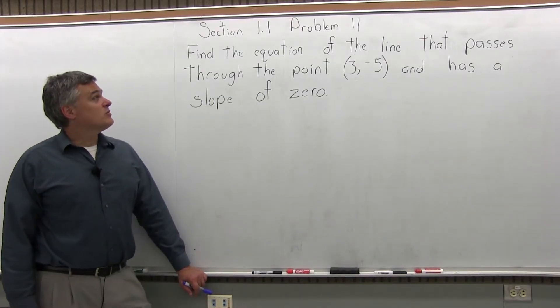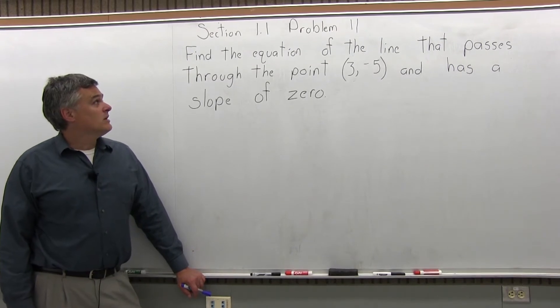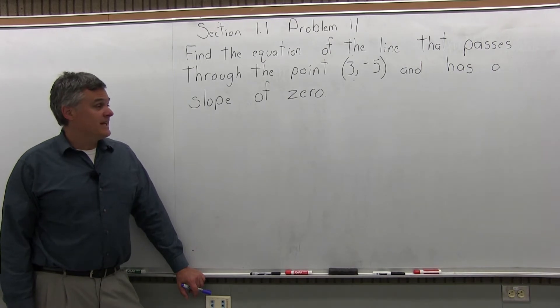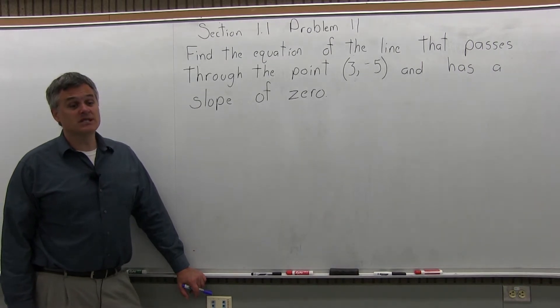This is question number 11 from section 1.1. Find the equation of the line that passes through the point (3, -5) and has a slope of 0.